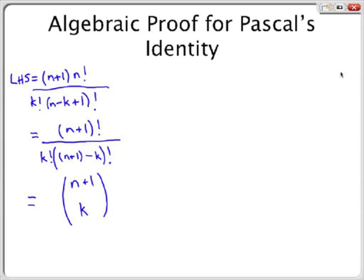Therefore, from our initial equation, which was n choose k plus n choose k minus 1, we have concluded that the left-hand side equals the right-hand side of n plus 1 choose k.